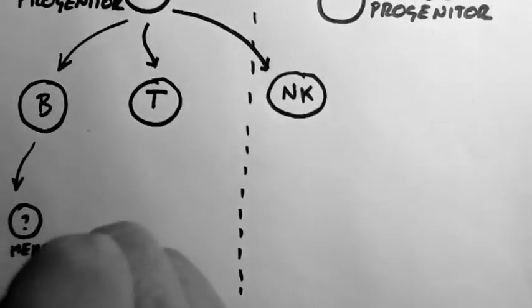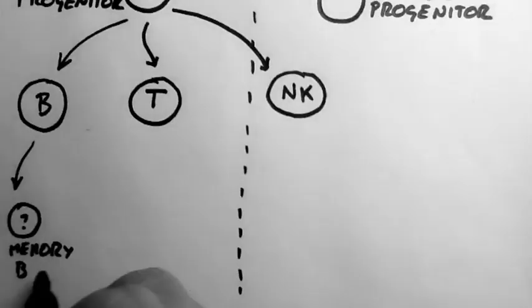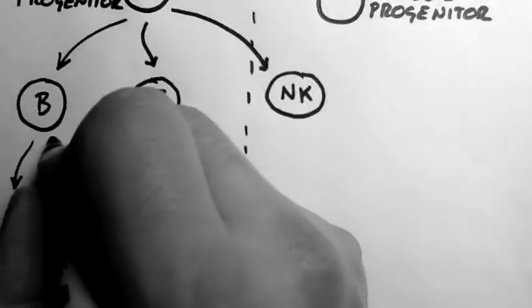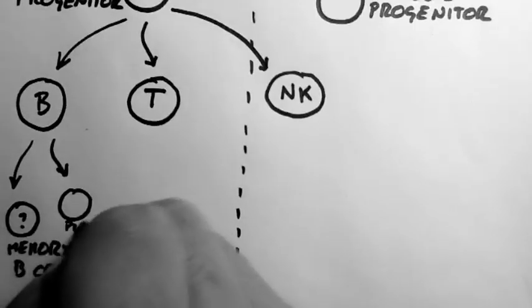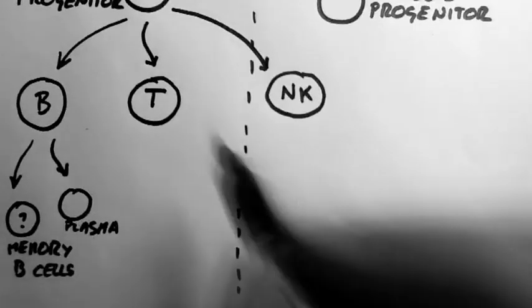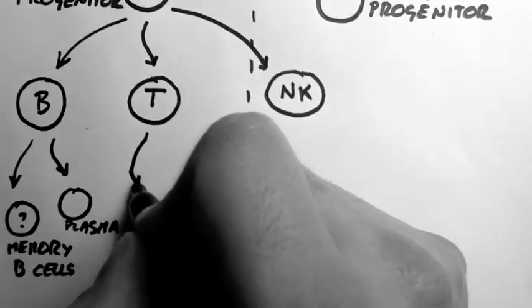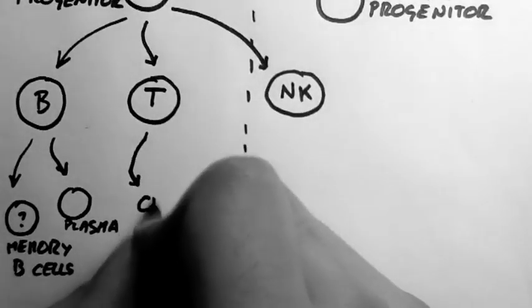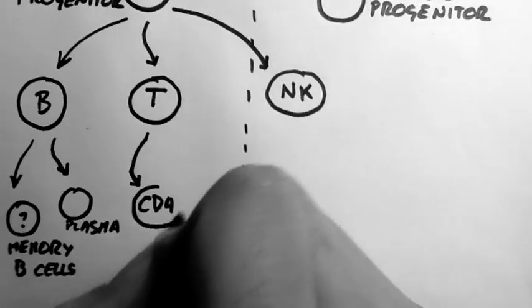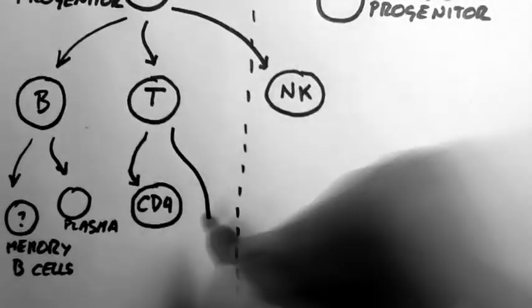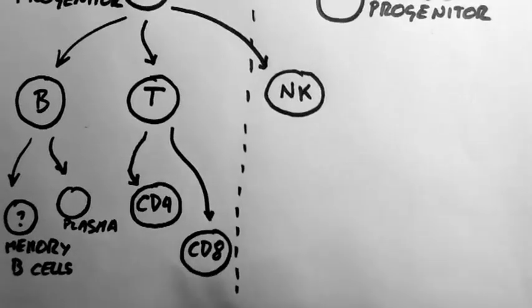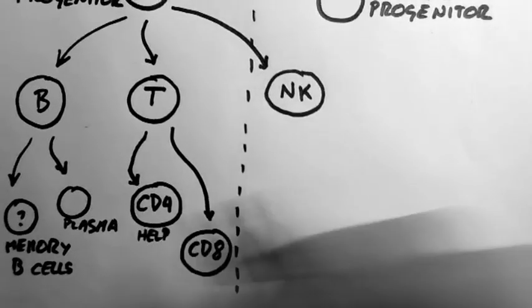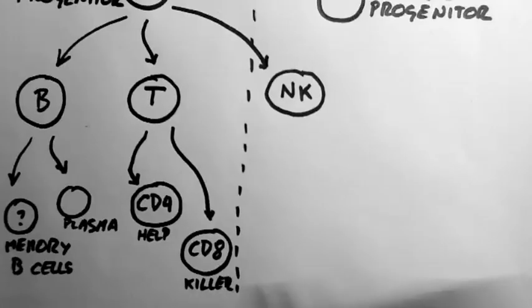Now the B cell can differentiate into memory B cells or into plasma cells. The T cell can differentiate into two different types of T cell, a CD4 and one called CD8. These just refer to proteins that they express on the surface. CD4 is also known as a helper T cell, and the CD8 is often known as a killer T cell.